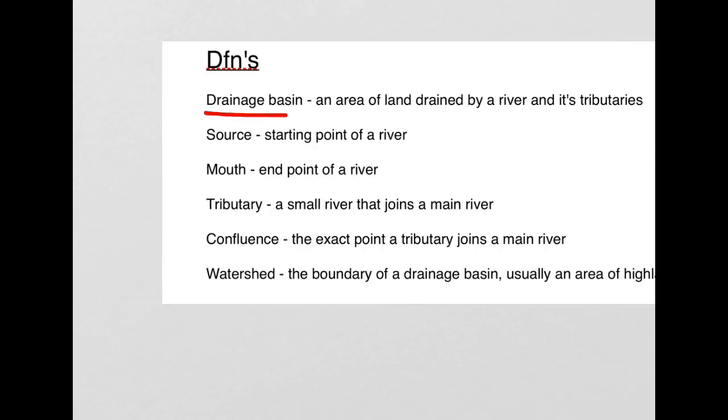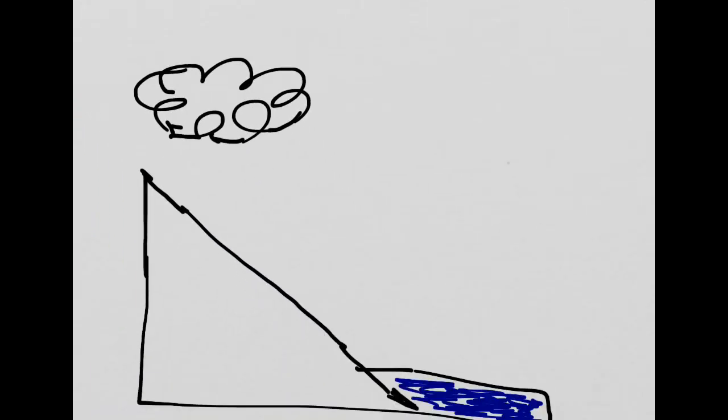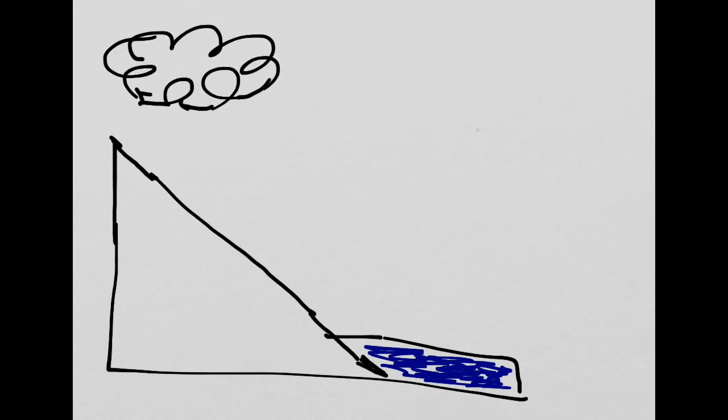The drainage basin is an area of land drained by a river and its tributaries. If we have a look at this simple diagram, the drainage basin is really concerned with what happens to precipitation in the form of rain, hail, sleet and snow as it falls onto the land and makes its way back to the sea.